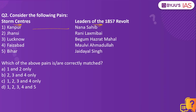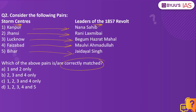Kanpur was led by Nana Sahib. Jhansi was led by Rani Lakshmibai. Lucknow was led by Begum Hazrat Mahal. Faizabad was led by Maulvi Ahmad Ulla. Bihar was led by Jai Dayal Singh. Which of the above pairs is or are correctly matched? The answer to this is 1, 2, 3 and 4.